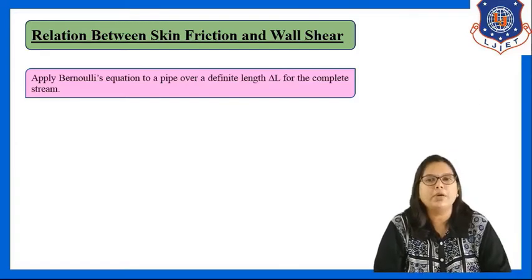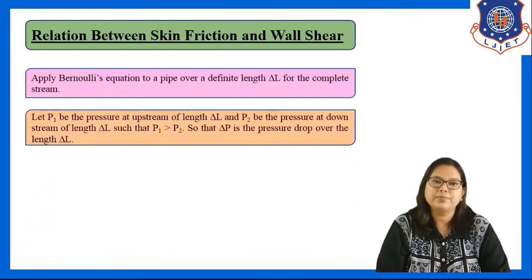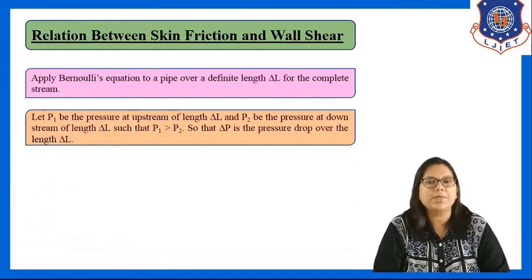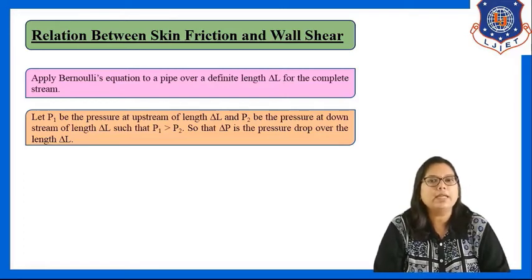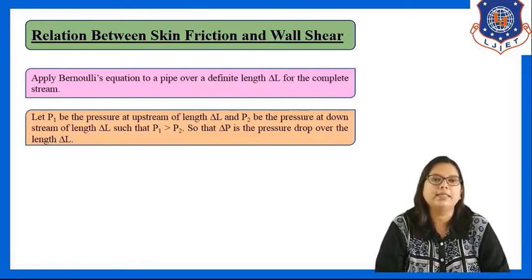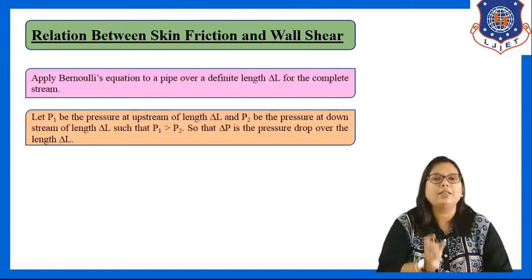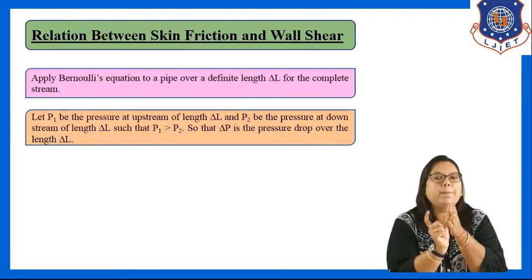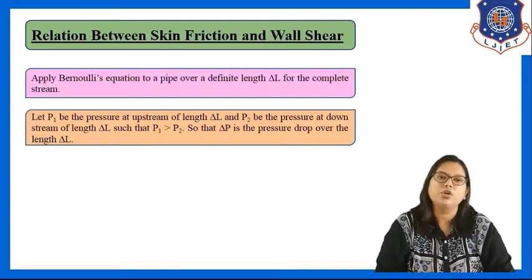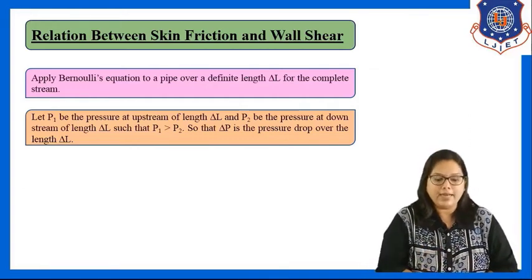We are applying Bernoulli's equation to a pipe over a definite length of delta l for the complete stream. Let P1 be the pressure at the upstream and P2 be the pressure at the downstream such that P1 is greater than P2. So delta P is the pressure drop over length delta l.